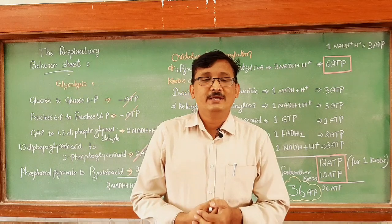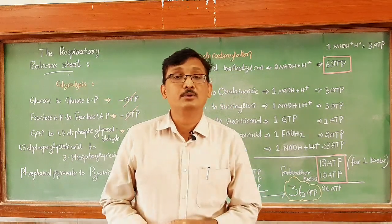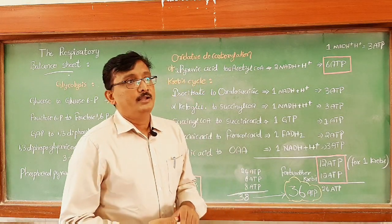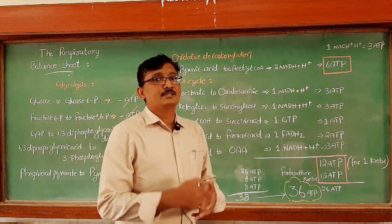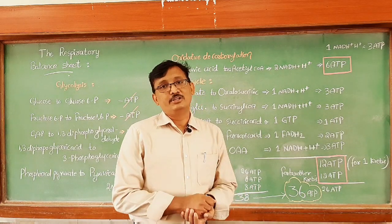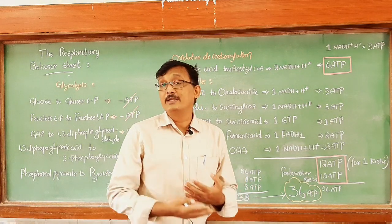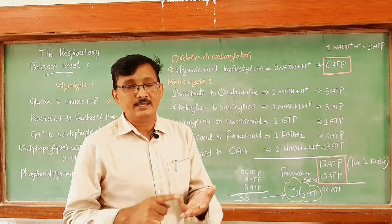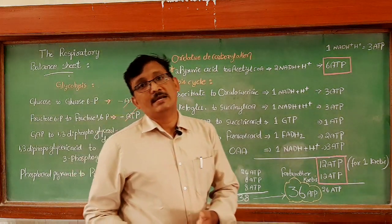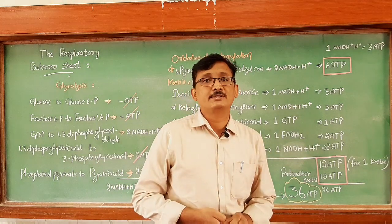We know that in the process of respiration, when we take one glucose molecule that is C6H12O6, it completely undergoes oxidation and it releases energy in the form of ATP. It takes place in different steps: glycolysis, next oxidative decarboxylation of pyruvic acid, Krebs cycle, and finally the electron transport system.